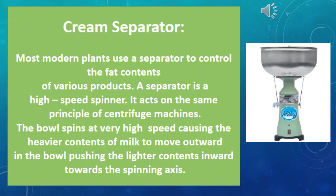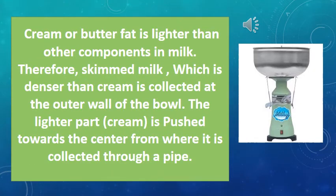Now we have to see the structure and working principle of the cream separator. Most modern plants use a separator to control fat content of various products. A separator is a high-speed spinner acting on the same principle as a centrifugal machine. The bowl spins at very high speed, causing heavier contents of milk to move outward, pushing the lighter contents inward towards the spinning axis. Cream and butter fat are lighter, so skimmed milk — which is denser — collects at the outer wall, while the lighter cream is pushed towards the center and collected through a pipe.